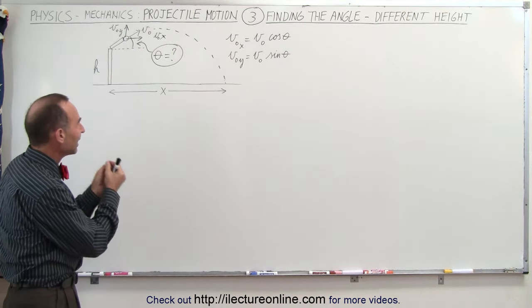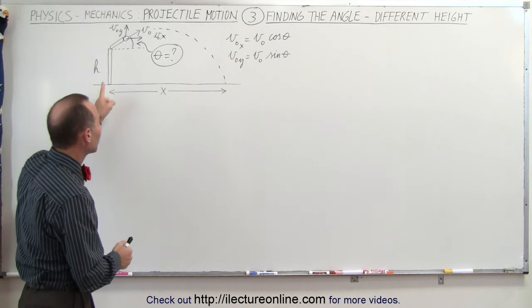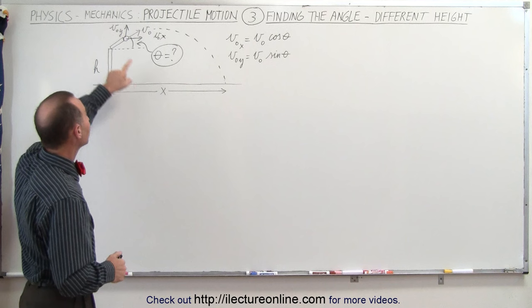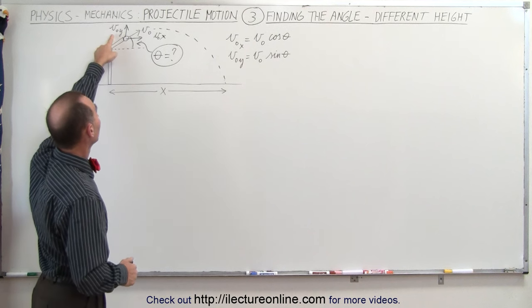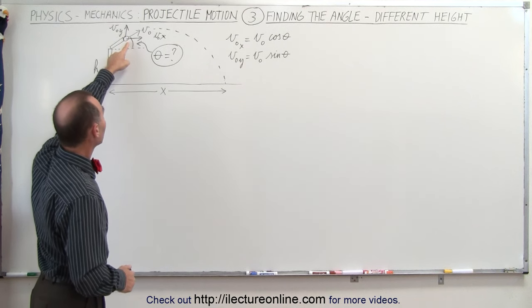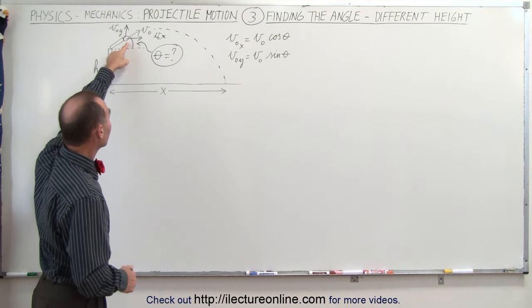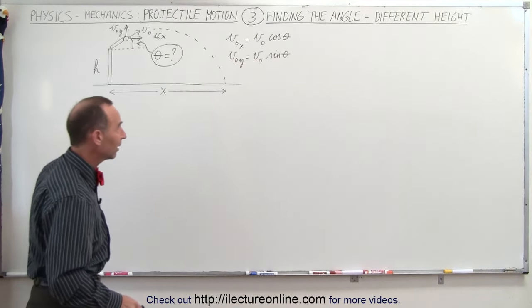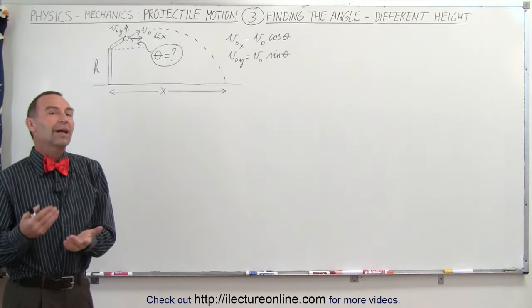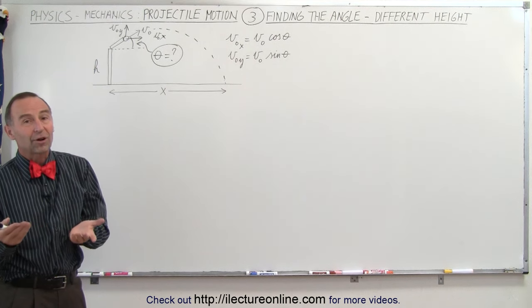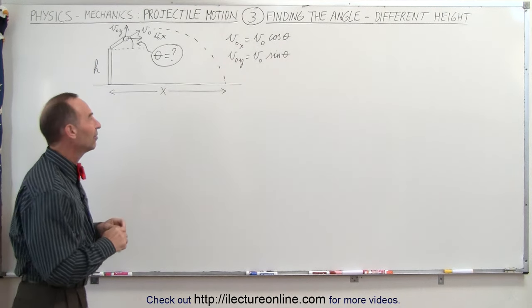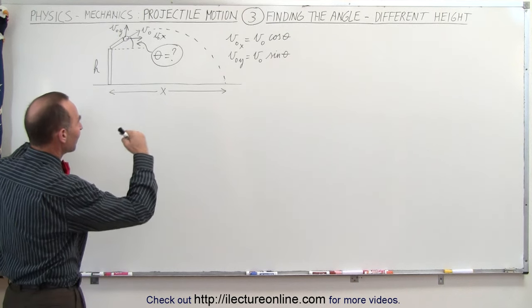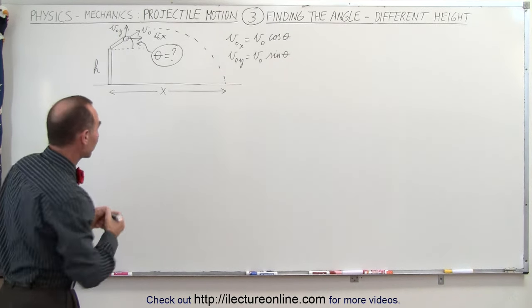So how do we find the angle required for the projectile to reach a certain distance? We'll still need the initial velocity in the y direction and the initial velocity in the x direction, which can be calculated from the angle. The start of the problem will be exactly the same as the simpler case where the heights are the same. We're going to find the time in the air for both the x and y directions.